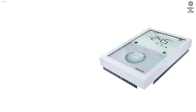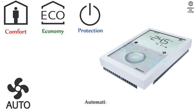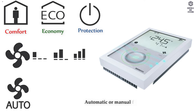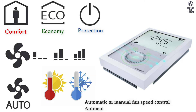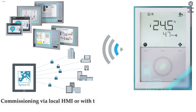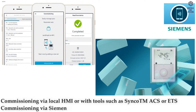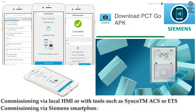Operating Modes include Comfort, Economy, and Protection. The device supports Automatic or Manual Fan Speed Control, and Automatic or Manual Heating or Cooling Changeover. Commissioning is via Local HMI with tools such as Synco, TMACS, or ETS, or via Siemens Smartphone Application PCT Go.